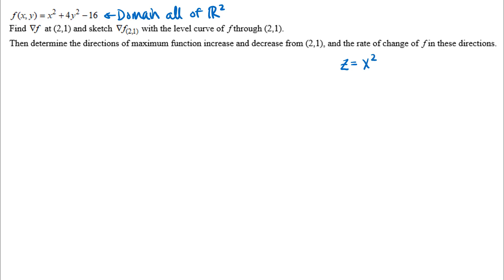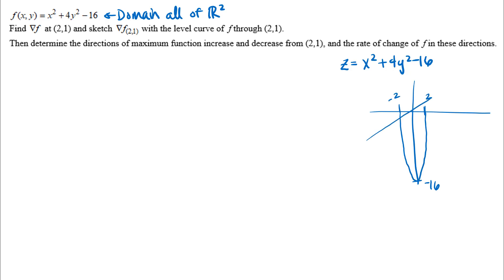Writing z equals x squared plus 4y squared minus 16: when x equals 0, z equals 4y squared minus 16 — a parabola crossing the z-axis at negative 16 and the y-axis at plus or minus 2. When y equals 0, z equals x squared minus 16 — a parabola intercepting the z-axis at negative 16 and the x-axis at plus or minus 4. When z equals 0, we get an ellipse intersecting the x-axis at plus or minus 4 and the y-axis at plus or minus 2.